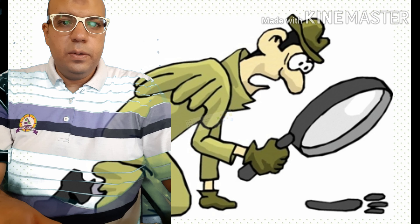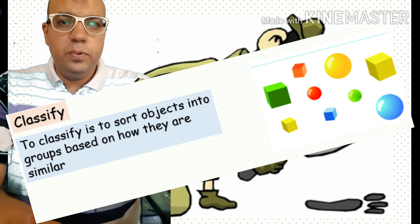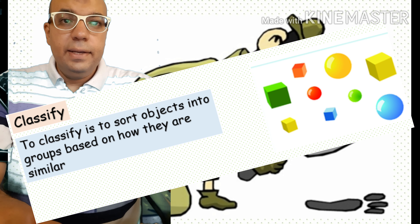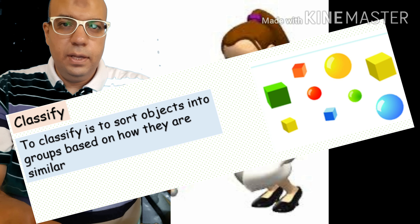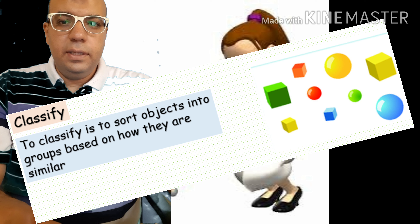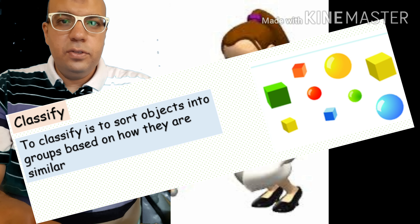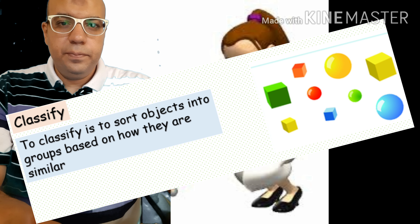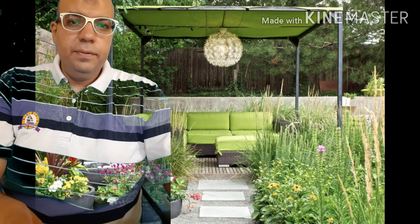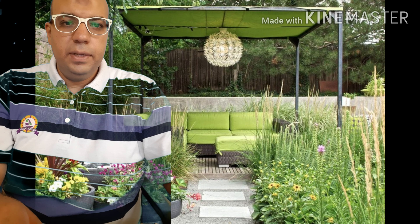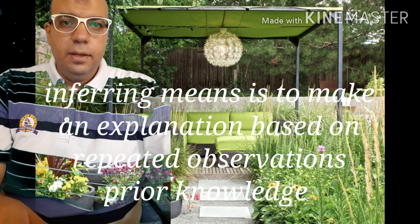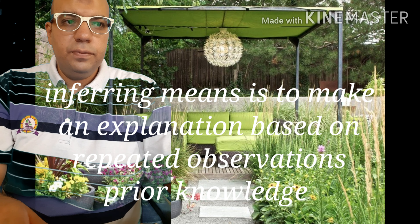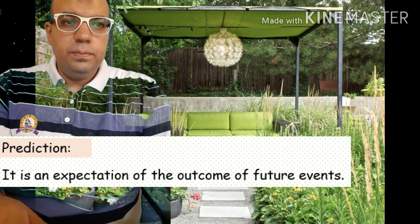We need to differentiate between classify, inferring, and prediction. Classify means to sort objects into groups based on how they are similar, such as classifying different animals or objects. Inferring means making a logical guess or inference. Prediction is an expectation of the outcome of future events, based on previous observations, patterns of evidence, or explanations.